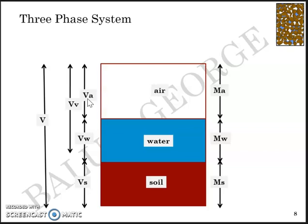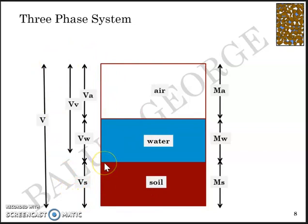In the classic representation of the three-phase system diagram, volumes are marked on the left side and masses are marked on the right-hand side. Most of the derivations we are about to discuss are based on the three-phase system diagram.